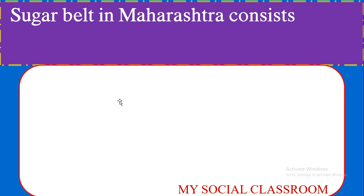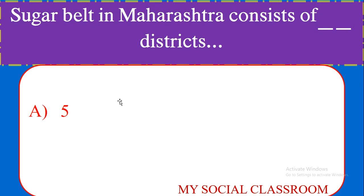The sugar belt in Maharashtra consists of how many districts? Options: 5, 6, 7, or 8 districts. Correct answer: 8 districts.